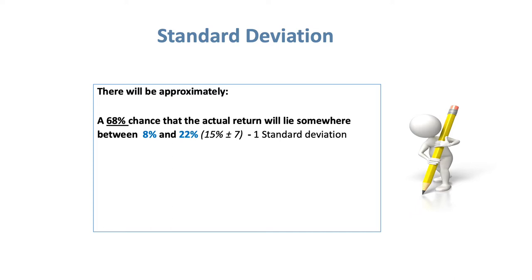Working through sequentially: one standard deviation covers 68% of occurrences based on past performance. We literally add and subtract 7 from 15 once each way. So 15 minus 7 gives us 8, and 15 plus 7 gives us 22. This tells us that within one standard deviation, there's a 68% chance — roughly two out of three years — that the range of returns for this investment will be between positive 8% and positive 22%.